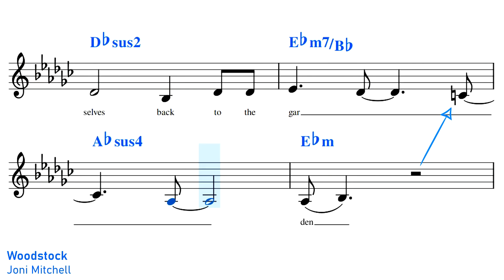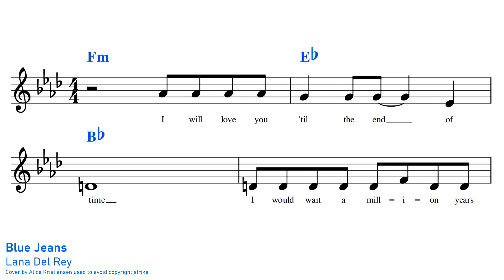Likewise, in Blue Jeans by Lana Del Rey, although the chord progression is using the Dorian sixth from more or less the very beginning of the song, the Dorian sixth doesn't make an appearance in the vocal melody until the chorus. Saving the Dorian sixth for the chorus adds a sense of satisfaction and intrigue when we finally hear it, which helps to lift the chorus and set it apart from the verse.